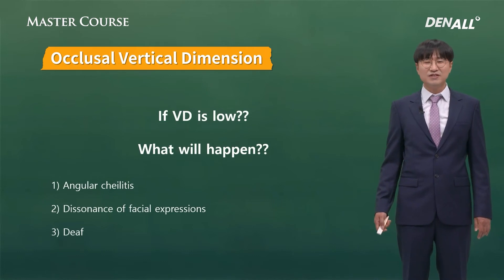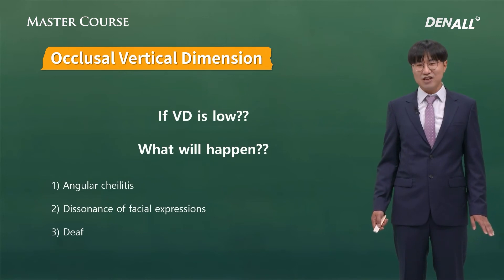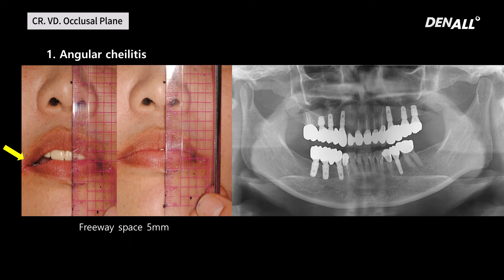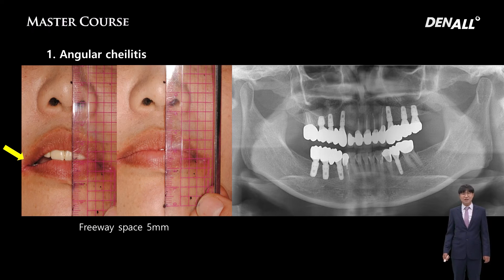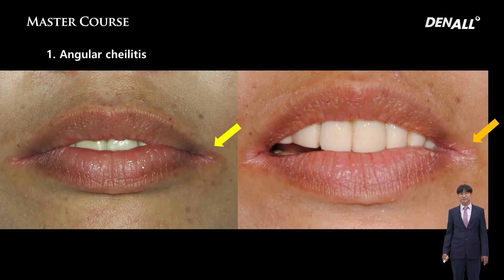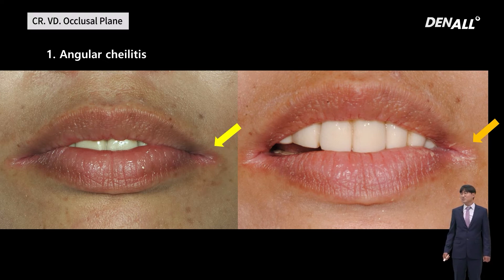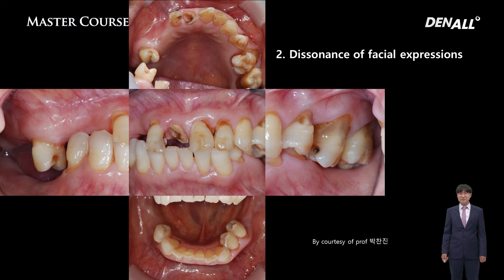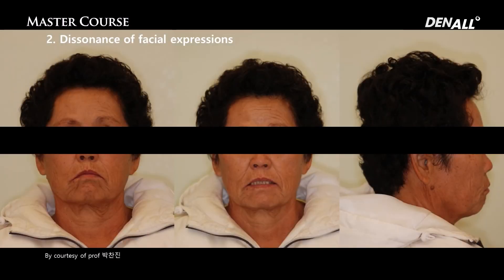When VD is low, what problems would it present? The problems include angulocheilitis, dissonance of facial expressions, and depth changes. Before prosthetic restoration, there was a huge freeway space discrepancy of 5 mm. Angulocheilitis is observed, so in such patients there is a high probability that VD is low. Because of it, saliva can be retained and fungus can grow. Restoring the vertical dimension would take a lot of time. Fortunately, the patient's angulocheilitis improved very much. In another case courtesy of Professor Chan Jin Park, dissonance of facial expressions is observed, and with the recovery of VD, facial expressions improve — meaning VD is directly linked to aesthetics.